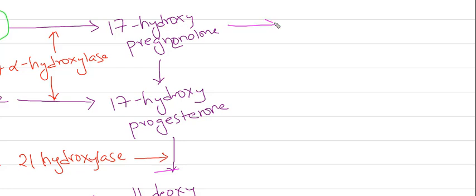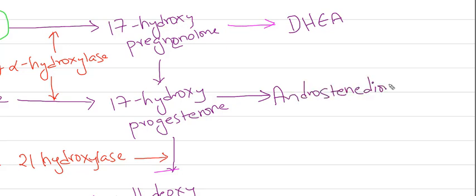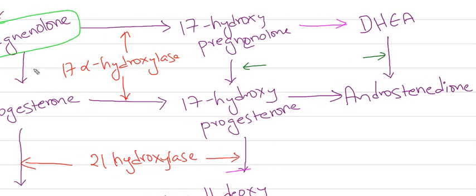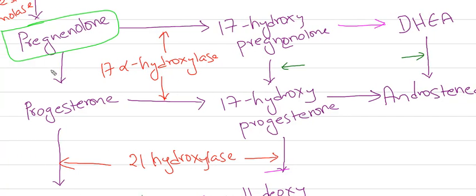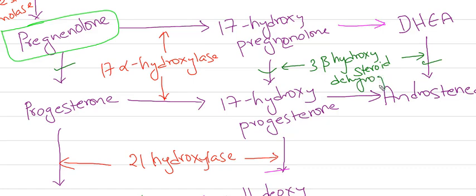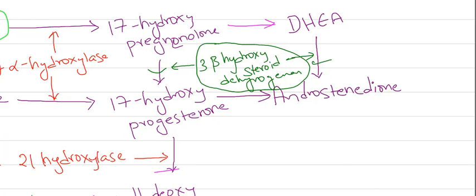From 17-hydroxypregnenolone we get DHEA (dehydroepiandrosterone), and from 17-hydroxyprogesterone we get androstenedione. These reactions, along with the conversion of pregnenolone to progesterone, are all catalyzed by 3-beta hydroxysteroid dehydrogenase, which is also an important enzyme — its deficiency has clinical significance.